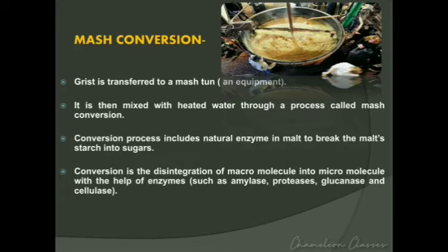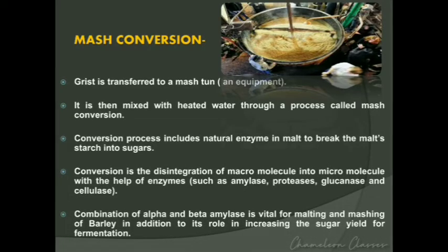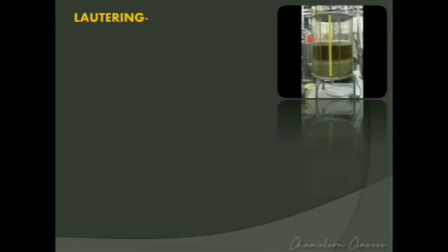The conversion process also includes natural enzymes already present in the malt to break malt starch into sugars. The combination of alpha and beta amylase is vital for malting and mashing of barley, increasing the sugar yield of fermentation. Essentially, these enzymes are crucial for the mash conversion of the malted cereal grains.